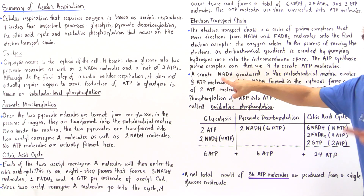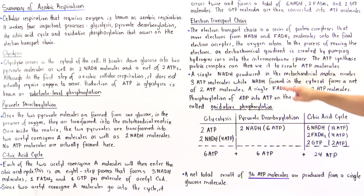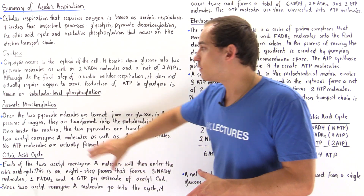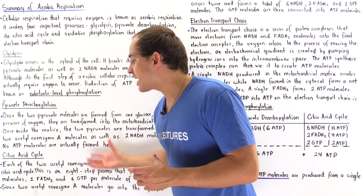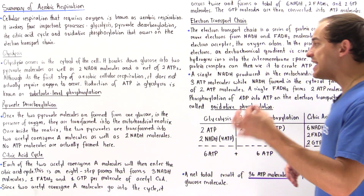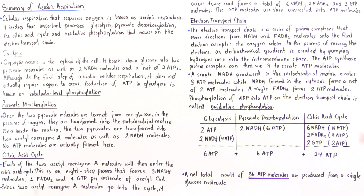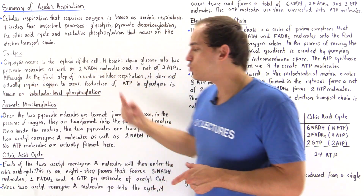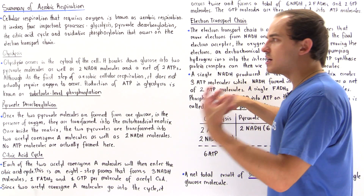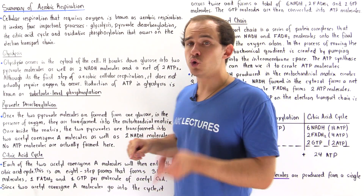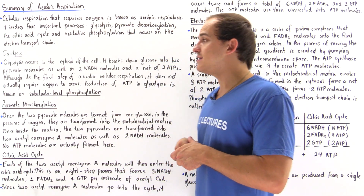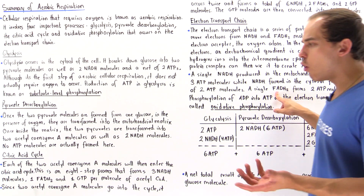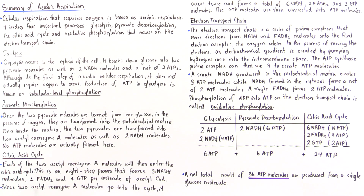A single NADH molecule produced in the mitochondrial matrix creates three ATP molecules. Therefore, NADH formed in pyruvate decarboxylation and the citric acid cycle, which both occur in the mitochondrial matrix, each produce three ATP molecules. However, NADH formed in the cytosol via glycolysis produces only two ATP molecules, because one ATP molecule must be used per NADH to transport it from the cytoplasm to the mitochondrial matrix.